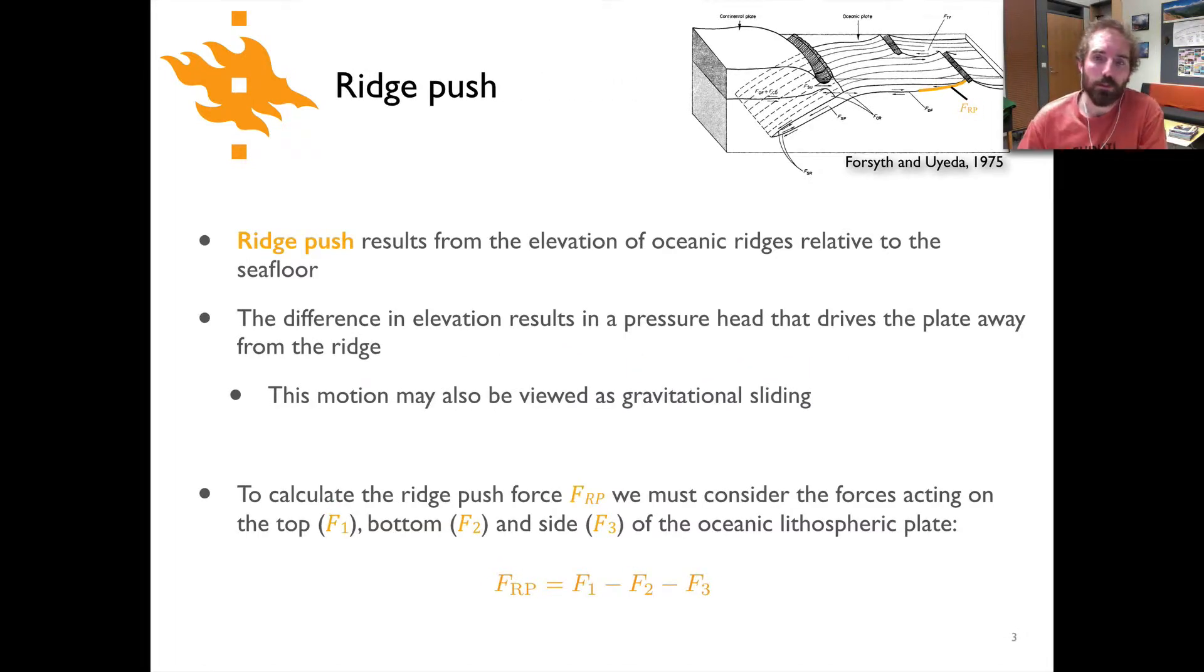Now ridge push is a force that results essentially from the elevation of oceanic ridges and the lithosphere near the ridges with respect to the rest of the seafloor. So you can see here highlighted in orange the elevated portion of the oceanic lithosphere near a spreading ridge and the force itself is basically like a pressure head. Same kind of thing that would happen if you had fluid at higher elevation driving pressure into some sort of lower elevation pipe or something like that. Or you can consider this as an example of something like gravitational sliding where you simply have this elevated slab that's going to glide down along the asthenosphere toward the elevations of the ocean seafloor.